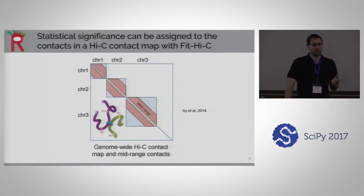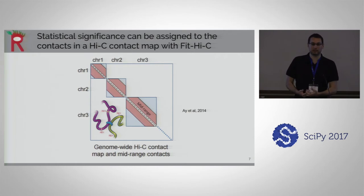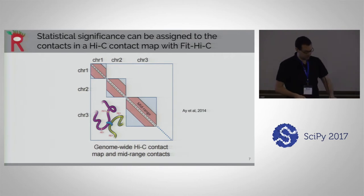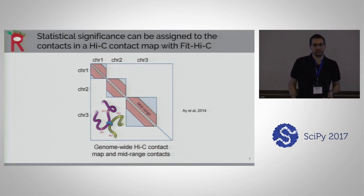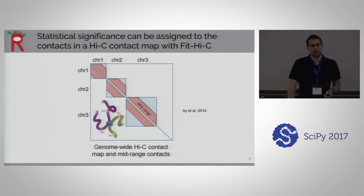One problem is that you might imagine identifying significant contacts by ranking regions by number of contacts, but this fails immediately because the regions in contact the most are those on the diagonal. You need to account for this genomic distance effect — there's an exponential number of contacts along the diagonal through physics alone. This is called the random looping phenomenon, and it's one of the biases addressed by a program called FIT-HI-C, previous work done in my advisor's lab.